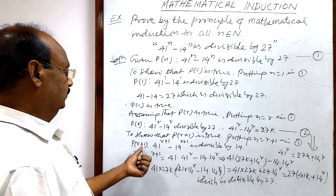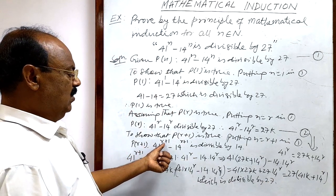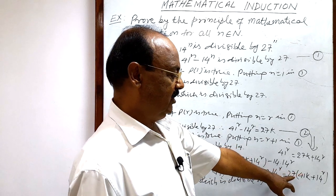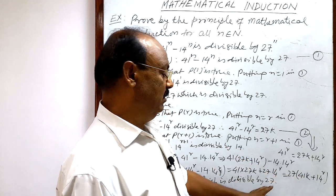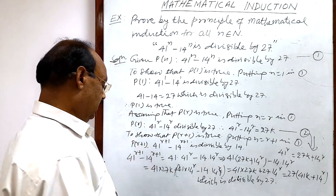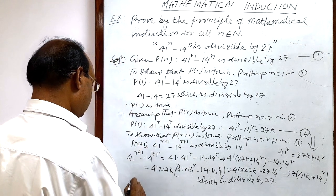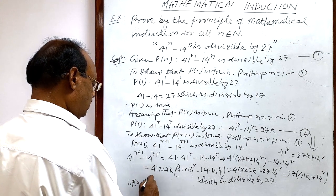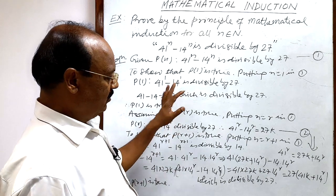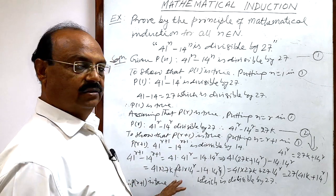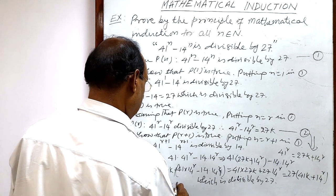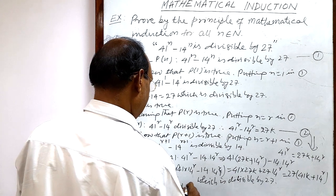This means we have proved that P(r+1), that is 41 to the power (r+1) minus 14 to the power (r+1), equals 27(41k + 14^r), and 27 is a factor, so it is divisible by 27. Therefore P(r+1) is true. The third step is complete.